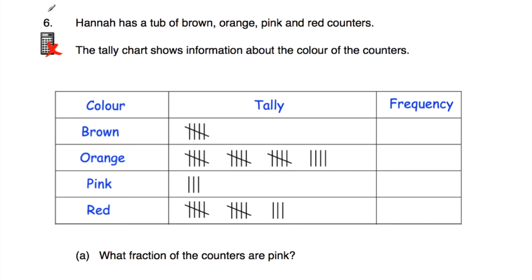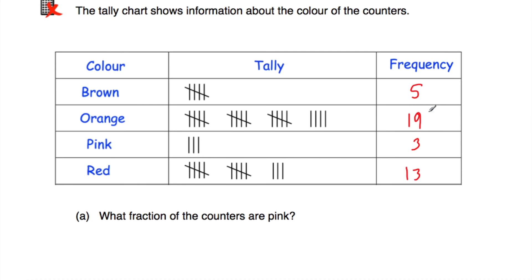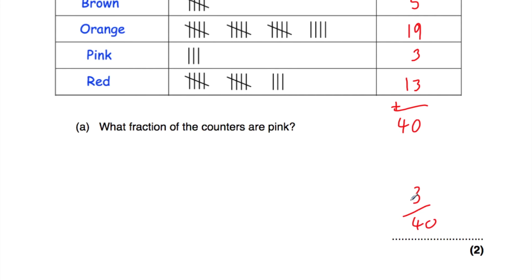Question number six. Hannah has a tub of brown, orange, pink and red counters, and the tally chart shows information about the colour of the counters. Part A: what fraction of the counters are pink? First, filling in the frequency column — brown: five, orange: 19, pink: three, red: thirteen. Adding together: five plus 19 is 24, plus three is 27, plus 13 is 40. There are 40 counters altogether. There are three pink counters, so the fraction is three fortieths — 3/40 of the counters are pink.